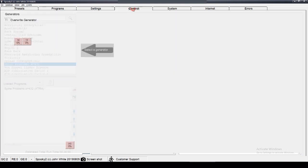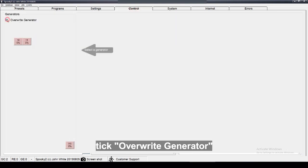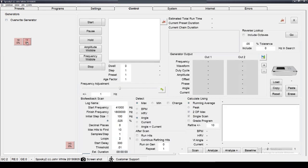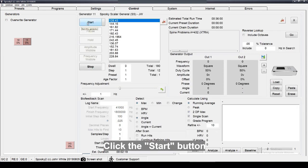Go to the control tab, tick override generator, and open a generator port. Click the start button.